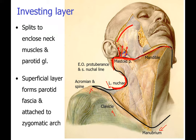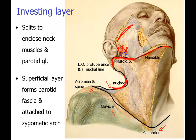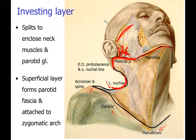The superficial layer forms the parotid fascia and is attached to the zygomatic arch. The deep layer goes deep to the parotid gland, and forms a ligament called the stylomandibular ligament — attached between the styloid process and the mandible. The investing layer also splits to enclose the sternocleidomastoid muscle with its two heads, and the trapezius muscle. Then anteriorly, once it splits and gets attached to the superior border of the manubrium, in the space created by the split fascia, you get the anterior jugular veins — so they lie within the two layers of the investing layer of deep cervical fascia.